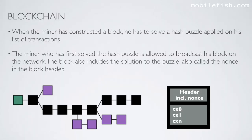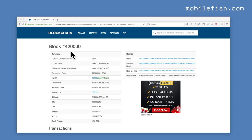When the miner has constructed a block, he has to solve a hash puzzle applied on his list of transactions. The miner who has first solved the hash puzzle is allowed to broadcast his block on the network. The block also includes the solution to the puzzle, called the nonce, in the block header. If we go back to block number 420,000, you will see the nonce over here. This nonce is a solution to the hash puzzle.